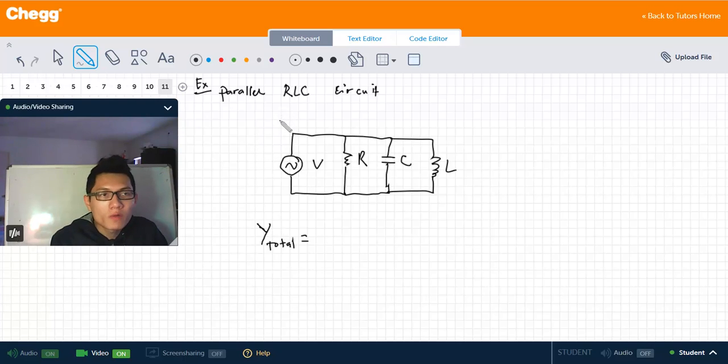But now for the admittance we find the inverse of that, so the admittance of any parallel circuit is the sum of each of the admittances that are parallel together.